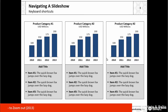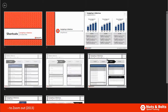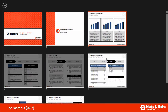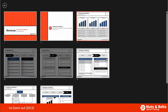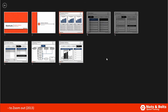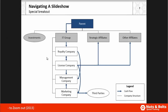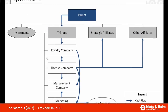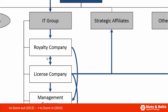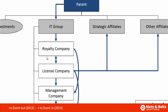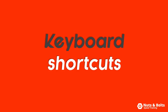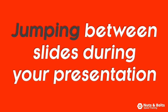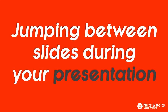If you have PowerPoint 2013, you can also navigate your slides by hitting the minus sign on your keyboard, which moves you to a slide sort view. Continue hitting minus to zoom out further so you can select a slide. You can also hit the plus sign to zoom in to see something closer up.